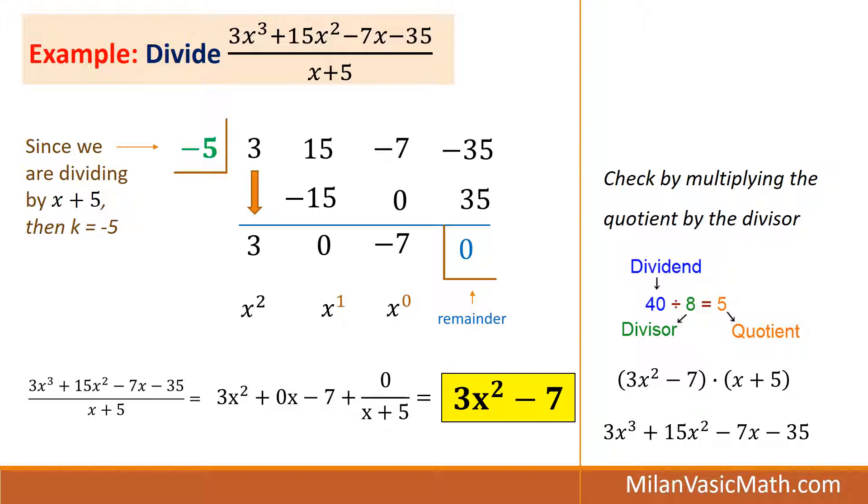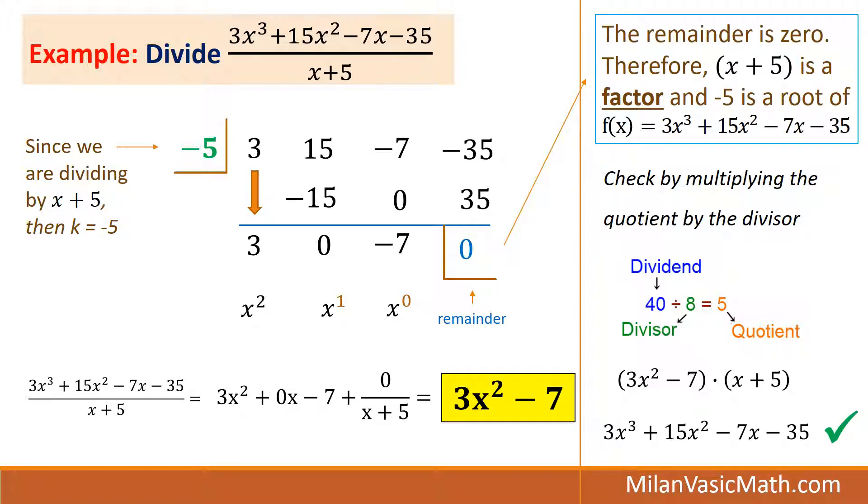And, also, since we had a remainder of 0, that means that x plus 5 goes into the numerator evenly. So, because of that, x plus 5 is a factor. And, also, negative 5 is a root of f of x equals 3x cubed plus 15x squared minus 7x minus 35.